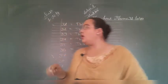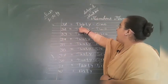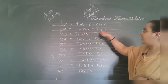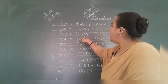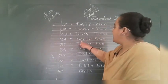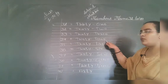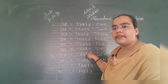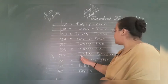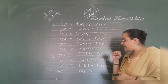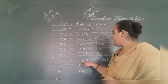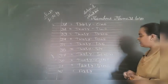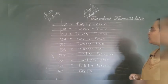Now, we can learn them. FORTY 40. THIRTY 30 ONE 1, 31. THIRTY 30 TWO 2, 32. THIRTY 30 THREE 3, 33. THIRTY 30 FOUR 4, 34. THIRTY 30 FIVE 5, 35. THIRTY 30 SIX 6, 36. THIRTY 30 SEVEN 7, 37. THIRTY 30 EIGHT 8, 38. THIRTY 30 NINE 9, 39. FORTY 40.